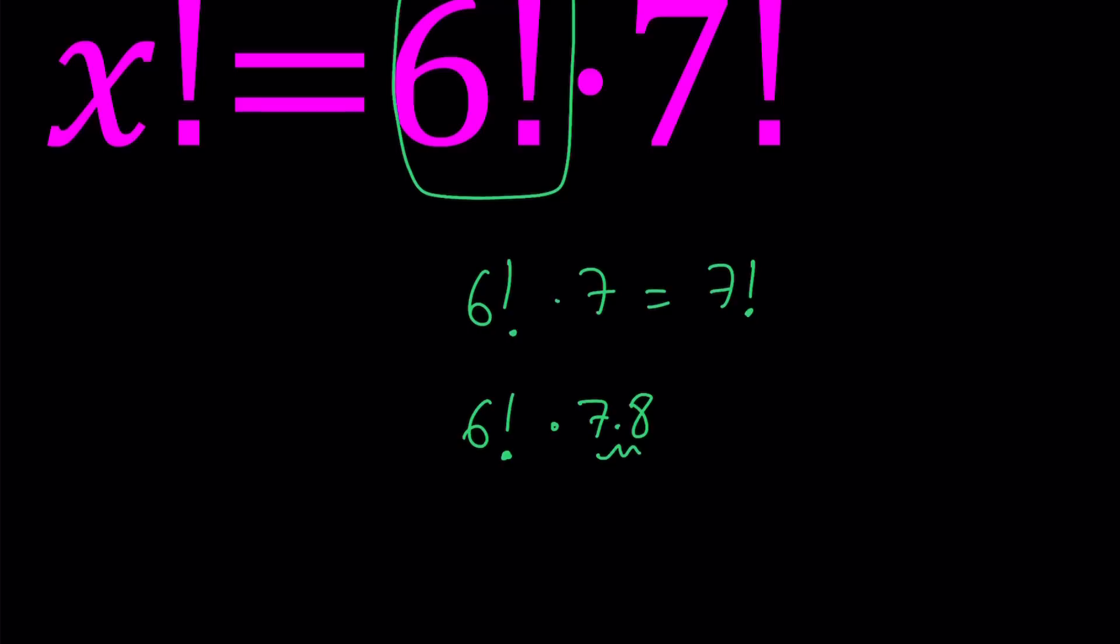So in this case, we have 7 factorial, right? But when I multiply by that, I need to get another factorial. So it can only be a product of consecutive integers. When you think about it, 6 factorial multiplied by 56 is 8 factorial, but 56 itself is not a factorial. And we have 7 factorial. 7 factorial does not equal 56, so it doesn't work. Make sense?